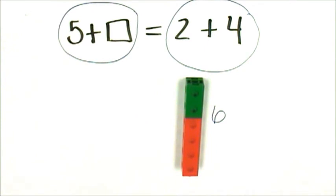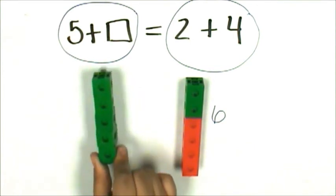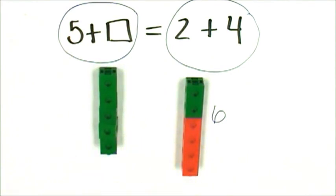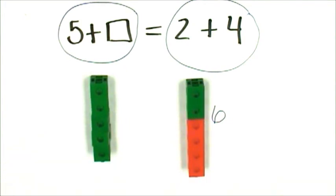Let's make a train that represents the expression on the left. It has to have the same value as the train on the right. Here's 5 green connecting cubes, but it still does not have the same value. I can see my connecting trains are not the same length.